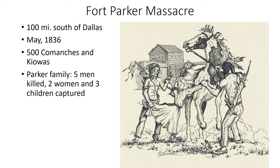On that day in May, they were attacked by anywhere from 100 to maybe as many as 500 Comanches and Kiowas, who swarmed down on them very quickly. Some of the Anglo people managed to escape, but five of the Parker men were killed, and two women and three children were captured — including, as illustrated in this drawing, a little girl who was eight or nine years old named Cynthia Ann Parker, one of the grandchildren of patriarch John Parker.